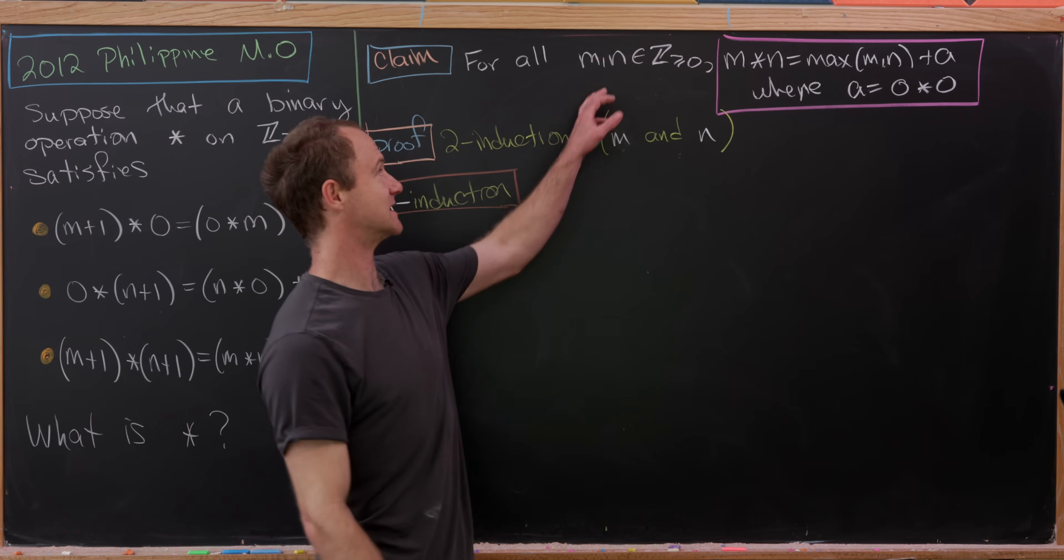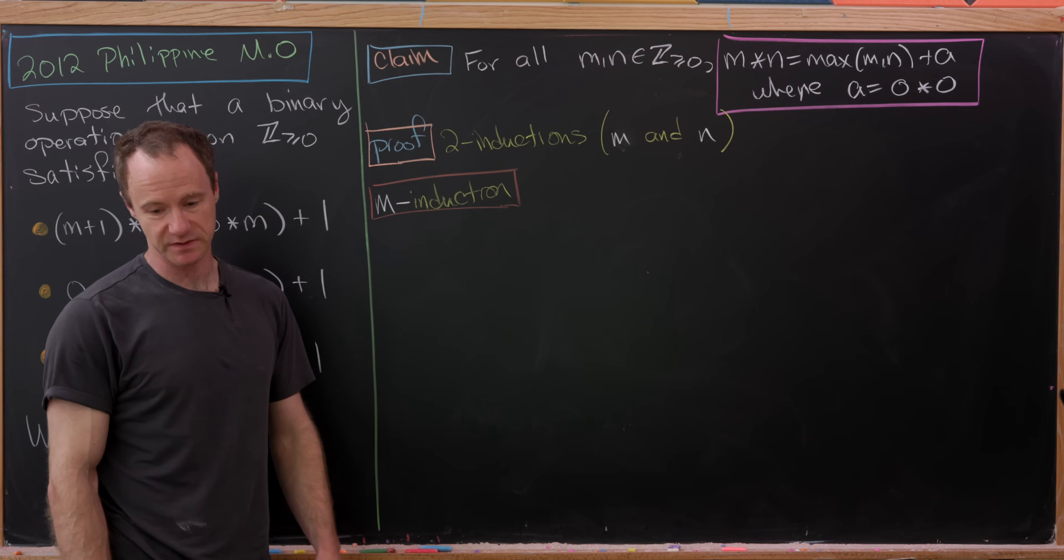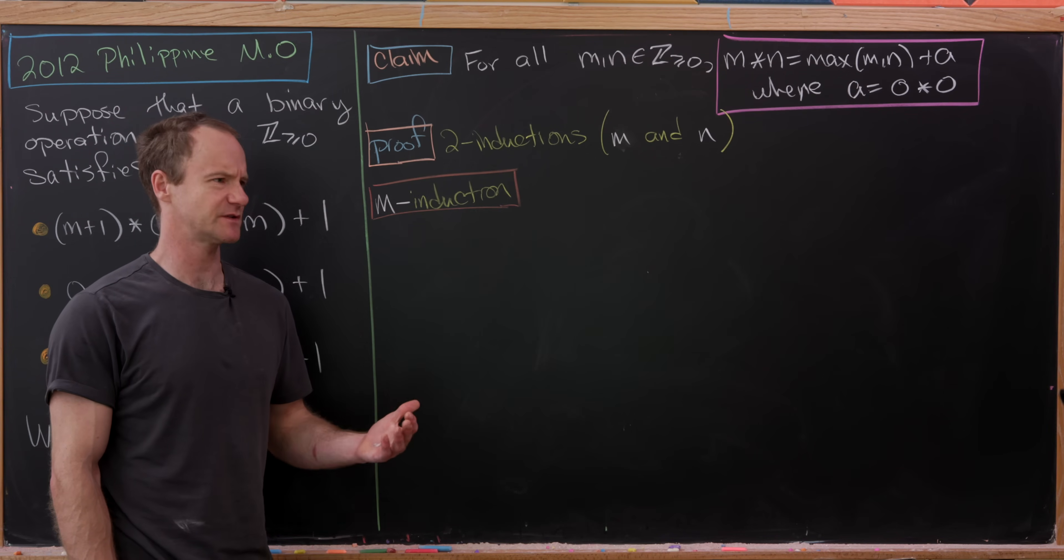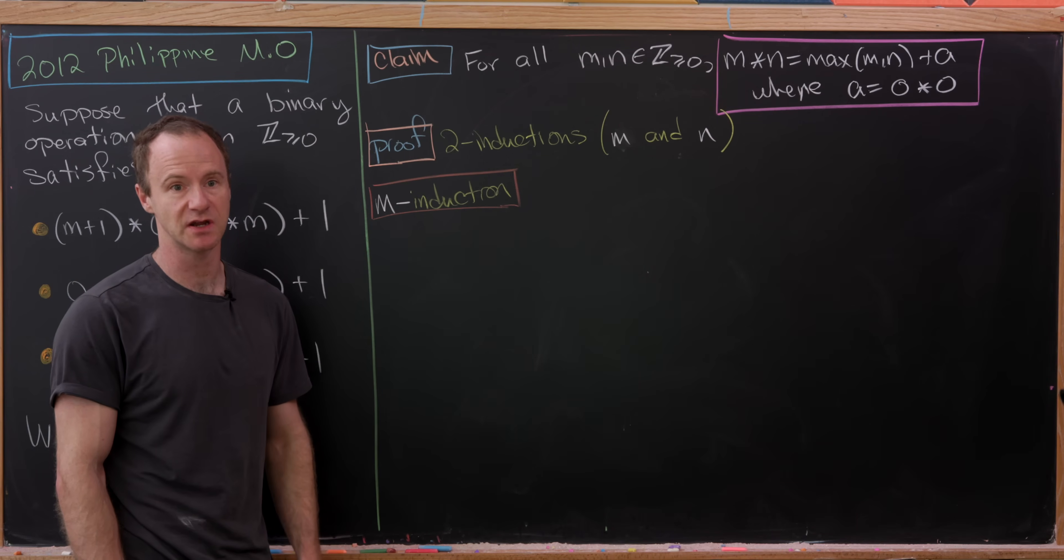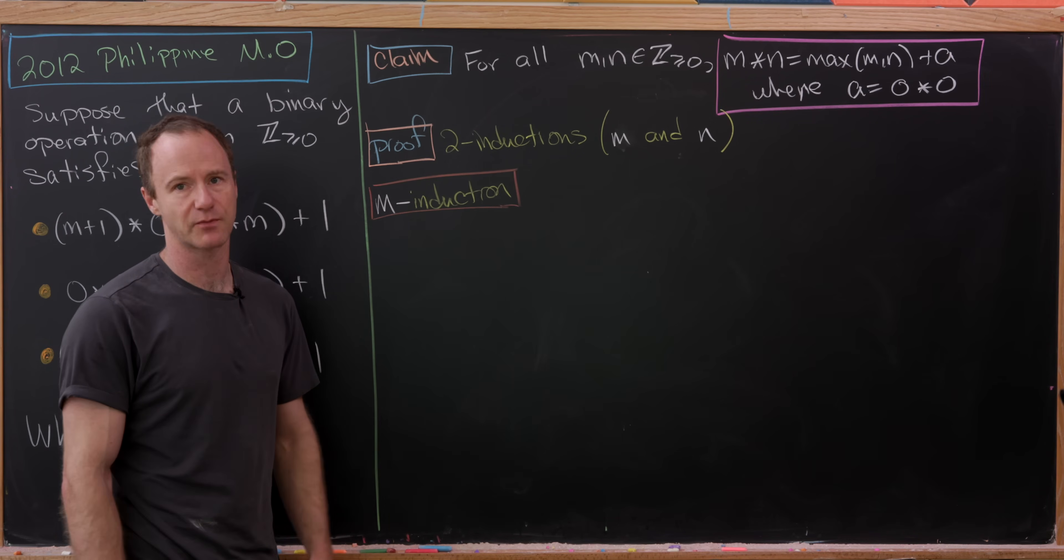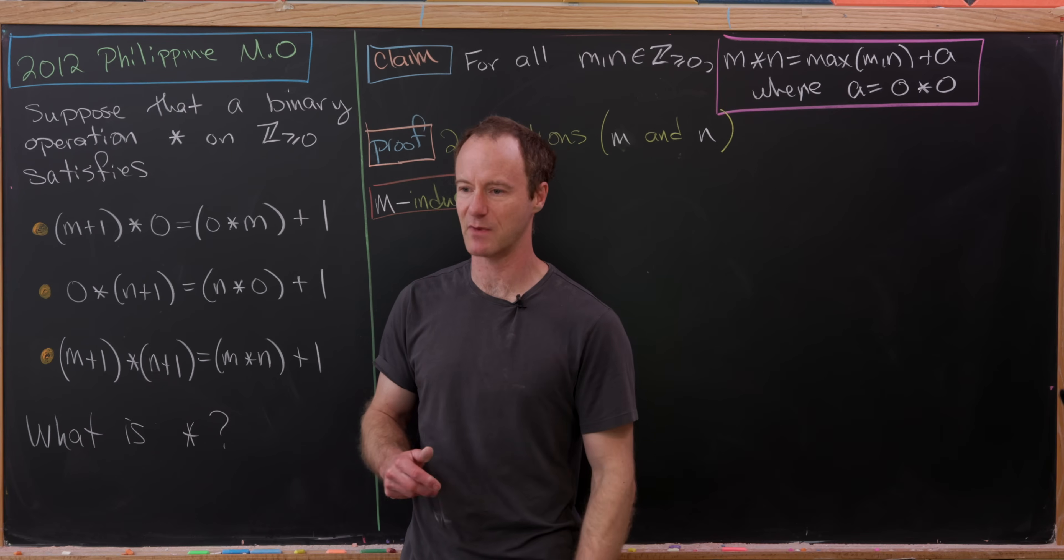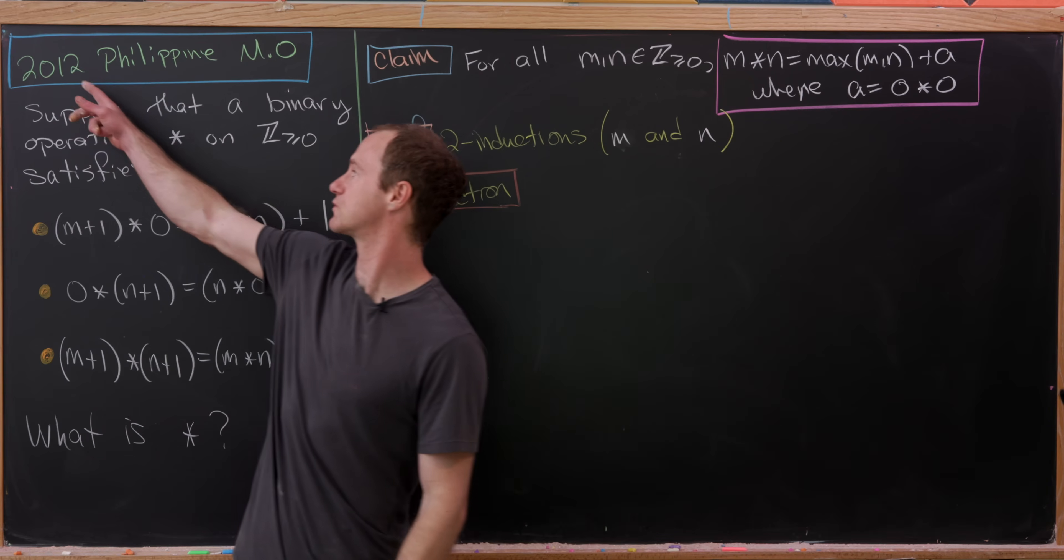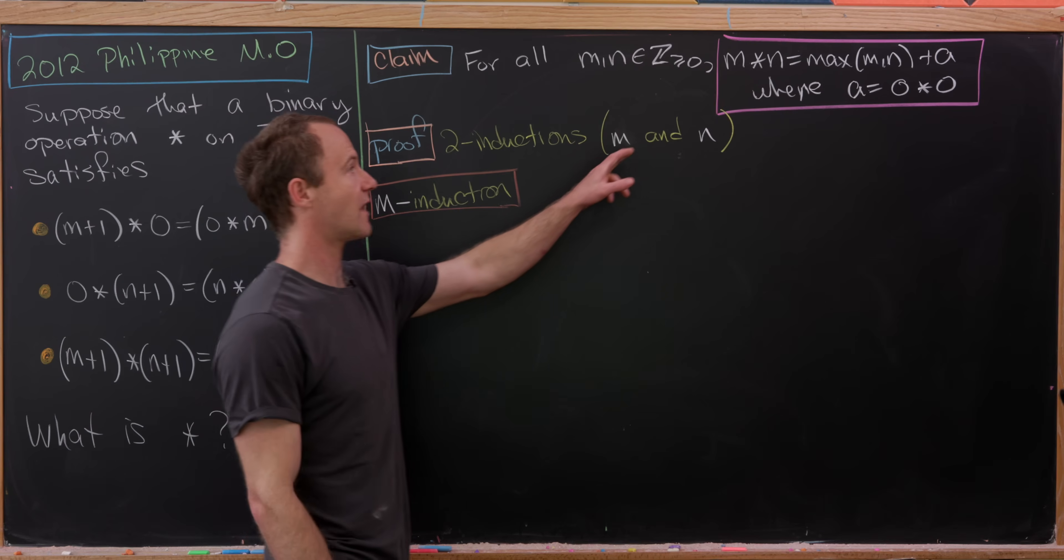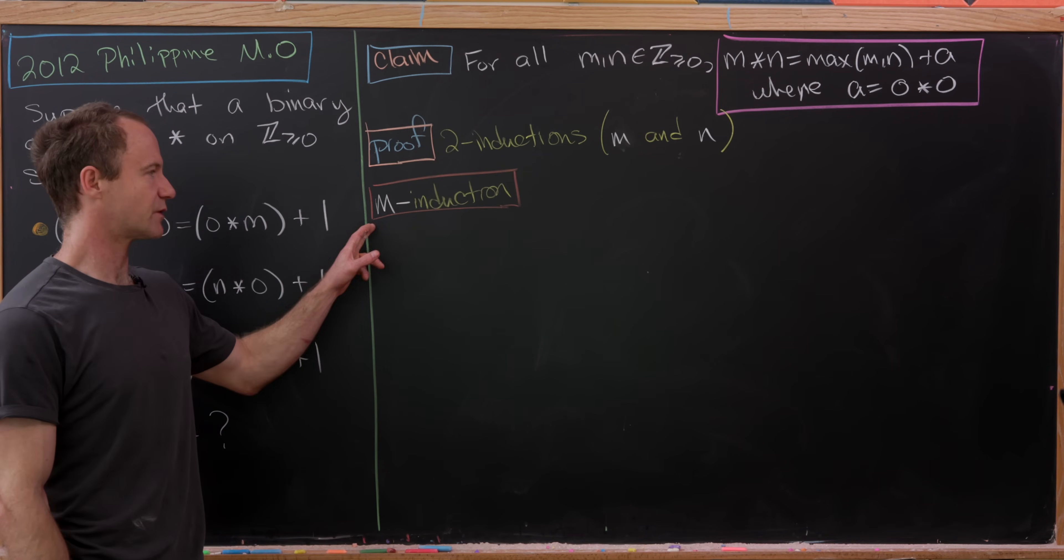Now let's prove this by induction. On the last board, we came up with a guess, and that guess is: for all non-negative integers m and n, m star n equals the maximum of m and n plus a, where a was 0 star 0. But this maximum operation can actually be thought of as a product. There's a topic in algebra that was very popular a few years ago known as tropical geometry, which looked at a lot of results in commutative algebra and algebraic geometry through the lens of replacing a product with this maximum operator. That's what I think the inspiration for this problem is. Let's see how we can prove this. We'll do this with two inductions, one on the first entry and one on the second entry. I think we'll probably just do the first entry and leave the second one as a homework exercise.